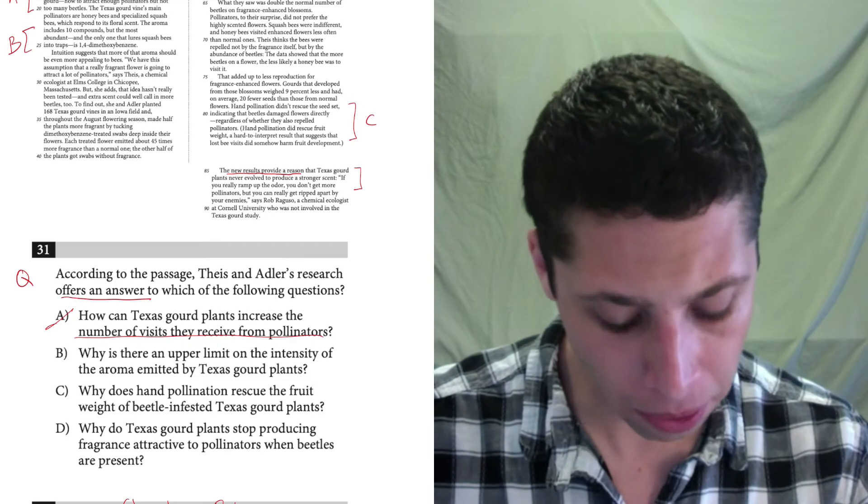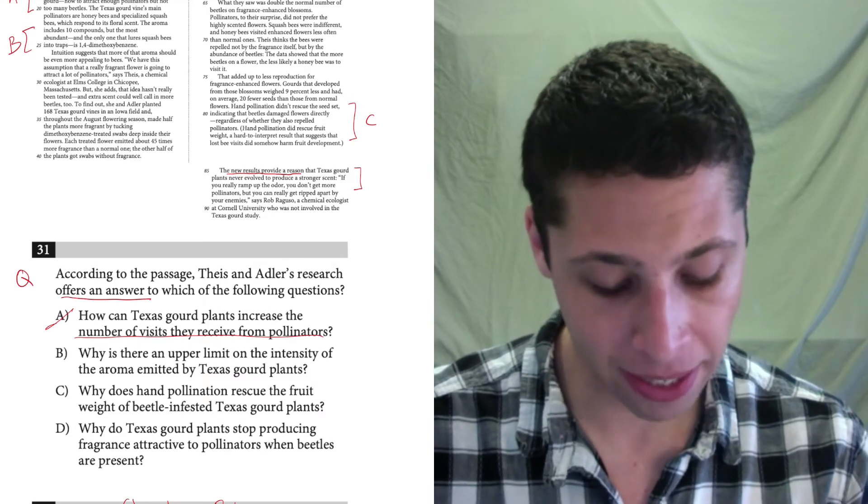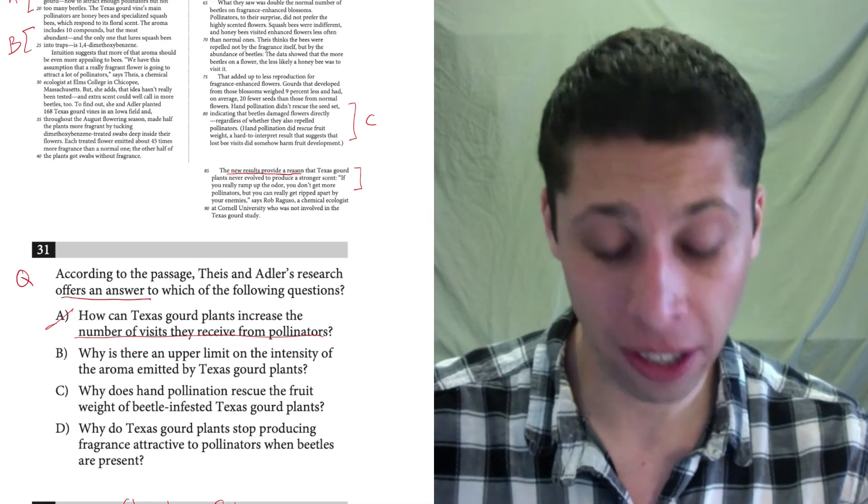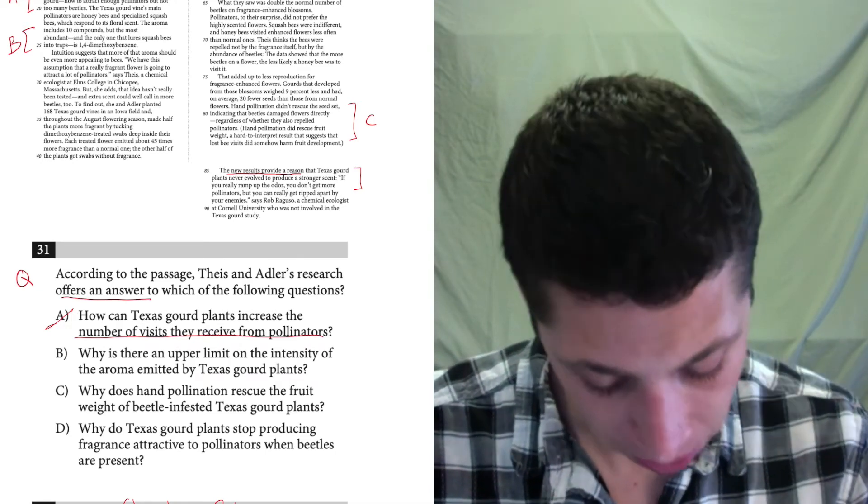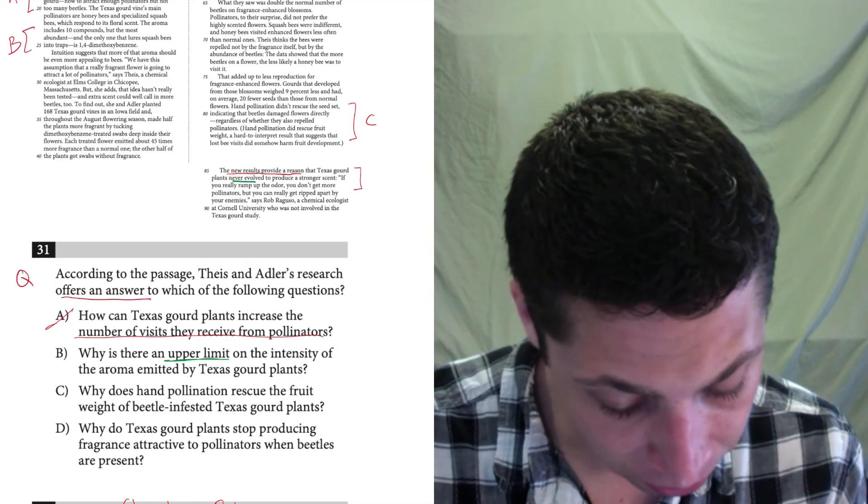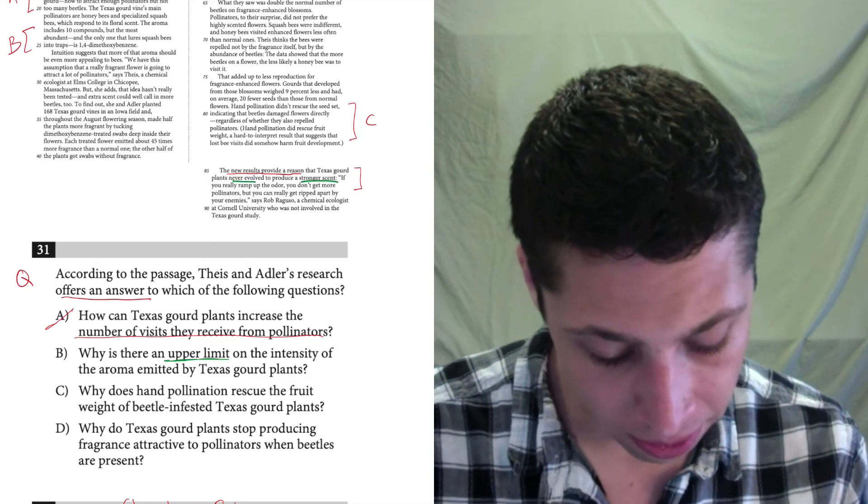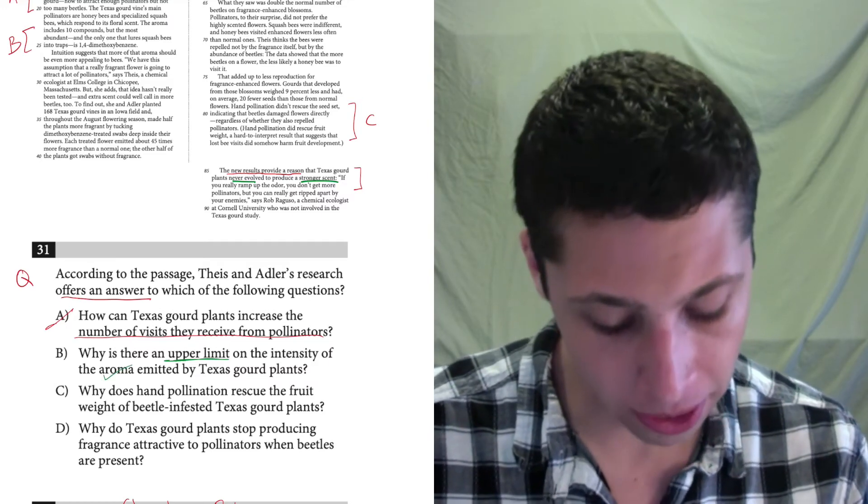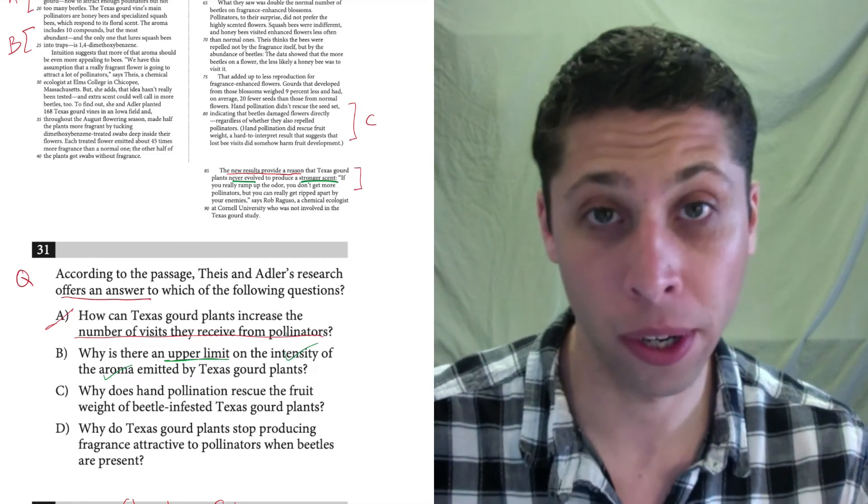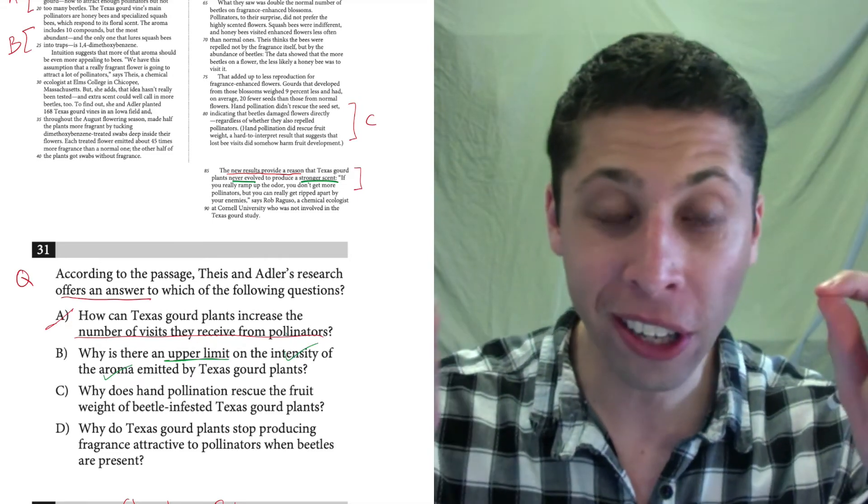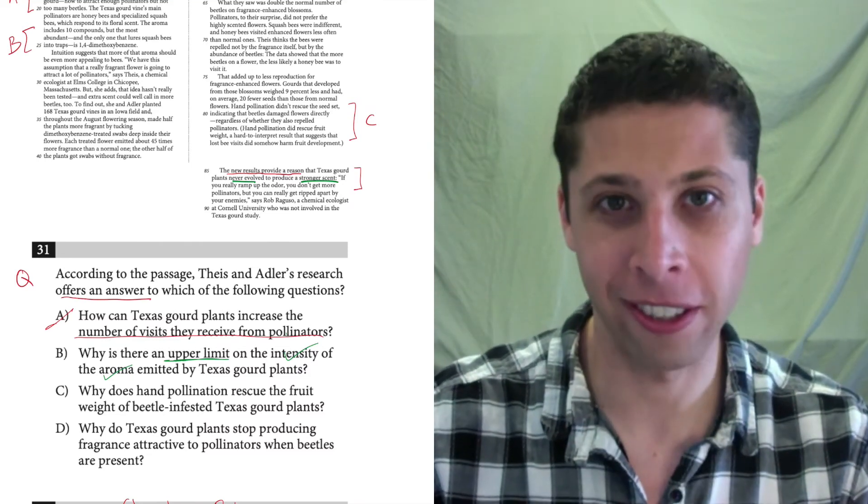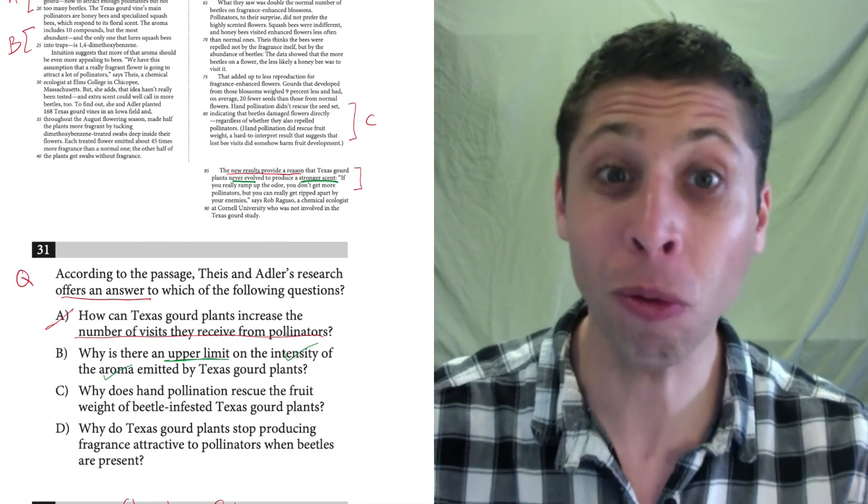Choice B. Why is there an upper limit on the intensity of the aroma emitted by Texas gourd plants? Well, speaking of finding matching ideas, there's a lot right here. So, upper limit means that they never evolved a stronger scent. Well, scent also matches with aroma pretty nicely. And intensity matches with stronger pretty nicely. So notice, there's a lot of words in that line reference that have direct correlations to the words and the choices. That's a really good sign.